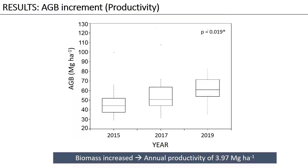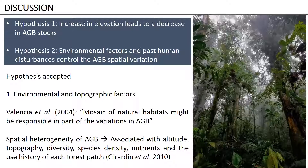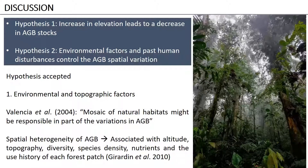In my discussion section, I want to give you a summary of my hypotheses. The first was that an increase in elevation leads to a decrease in above-ground biomass stocks, and this is connected with my second hypothesis where environmental factors and past human disturbances can control the above-ground biomass spatial variations. After analyzing the information, I accepted both hypotheses.